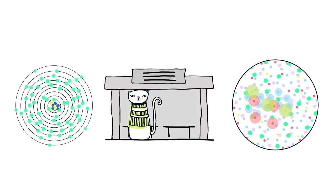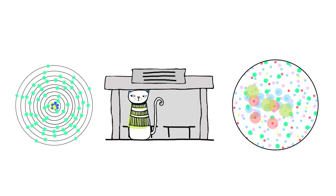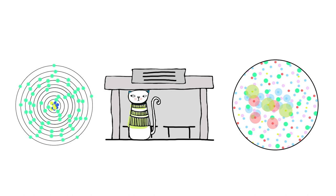Researchers say we're just at the tip of the iceberg in understanding universality in math, physics, and even biology.